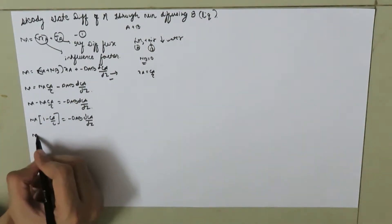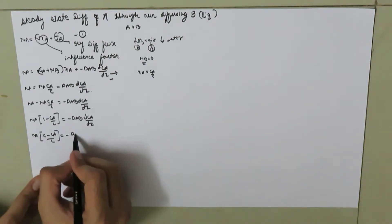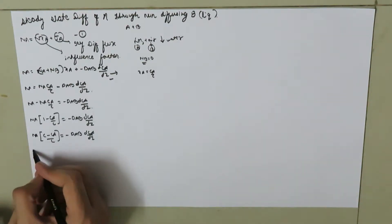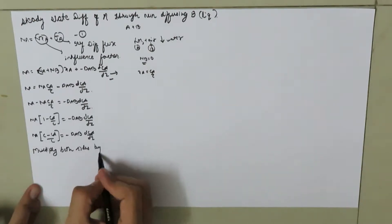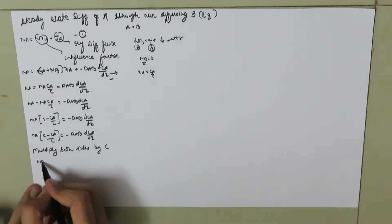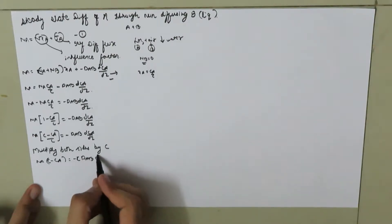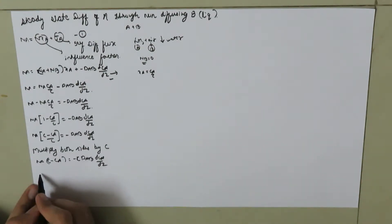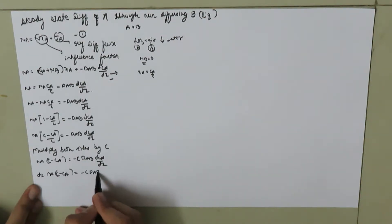This gives Na·(C − CA)/C = −DAB·(dCA/dZ). Multiplying both sides by the total concentration C: Na·(C − CA) = −C·DAB·(dCA/dZ). Separating variables: dZ·Na·(C − CA) = −C·DAB·dCA.